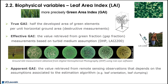This can also be done by other instruments like the LAI 2000. When it comes to satellite observation, we must talk about the apparent green area index, which depends on the assumptions associated with the estimation algorithm, including assumptions on leaf orientation and leaf clamping constants.